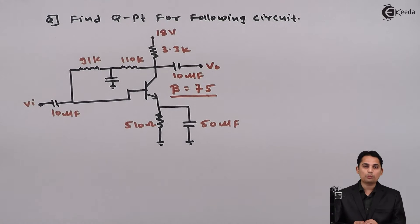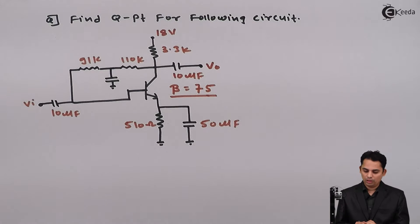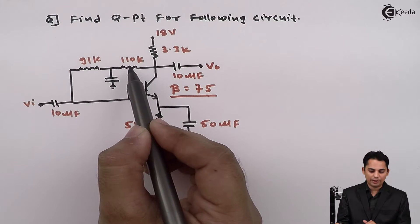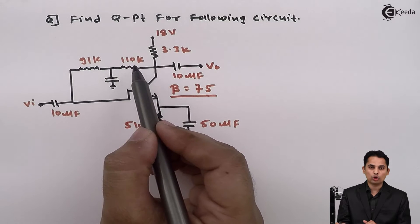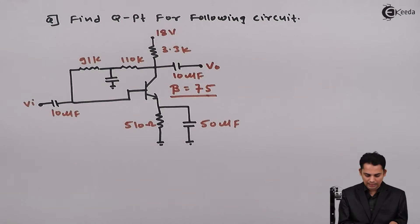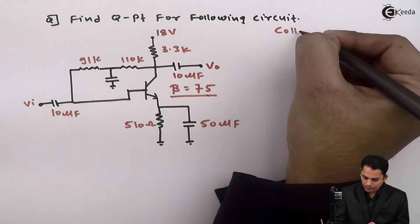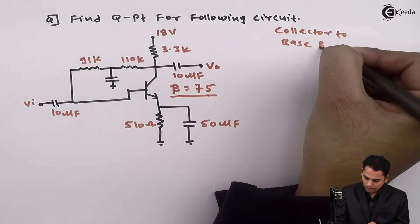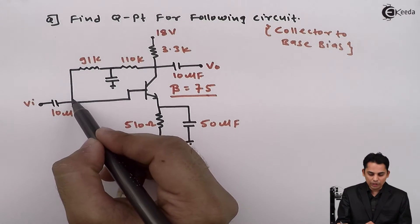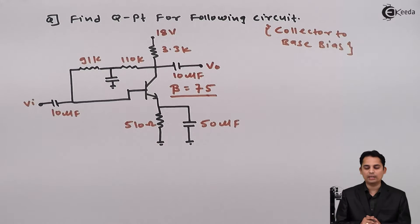They have given another problem. If you see this problem properly, they have given two resistors at the base, RB1 and RB2, having values 91 kilo ohms and 110 kilo ohms. If we identify this particular circuit, we can name this circuit as collector to base bias, because one end of the base is joined to the collector, hence it is called collector to base bias.